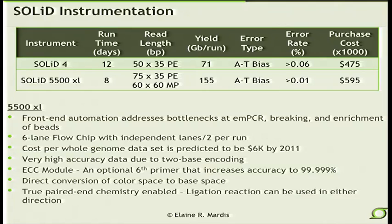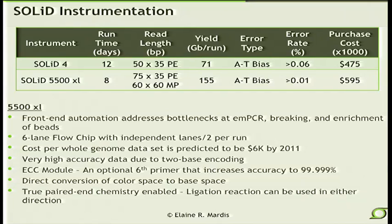This is the SOLiD instrument — the name of the platform. These are the two most recent versions, with the 5500 XL being most recently introduced just last year. The error rate is extraordinarily low. There's front-end automation and a six-lane flowchip that actually allows you to use some lanes and not others. They're introducing some new primer chemistries that would increase the accuracy even further, which could be very interesting.